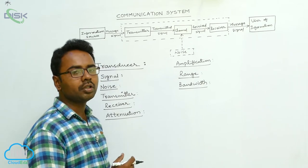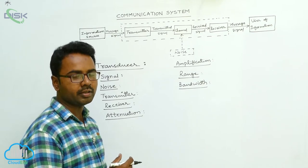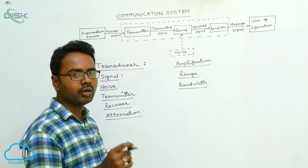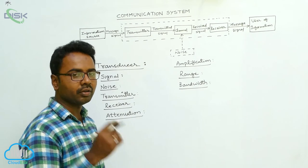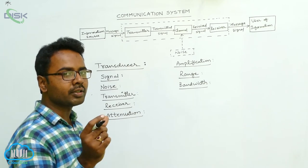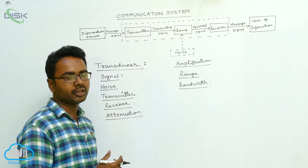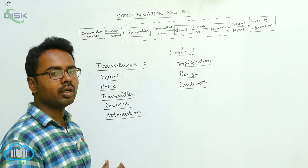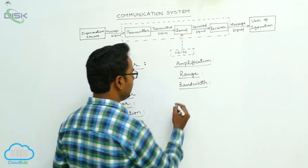Bandwidth is the portion of the spectrum occupied by the signal, or the frequency range over which an equipment works. For example, a radio works between two particular frequencies — the frequency range over which the radio works is its bandwidth. Every signal occupies a particular portion of the spectrum and has a particular frequency range, which is called its bandwidth.